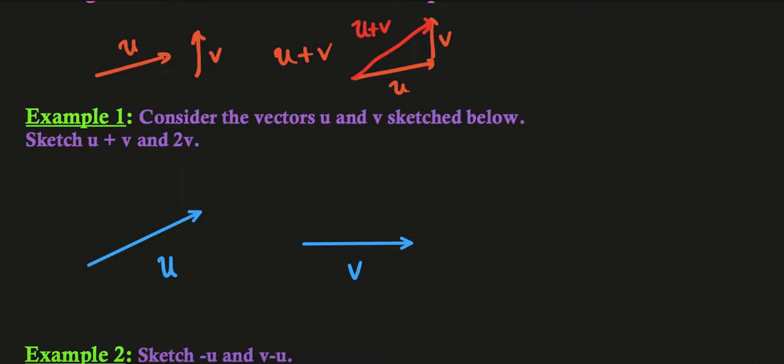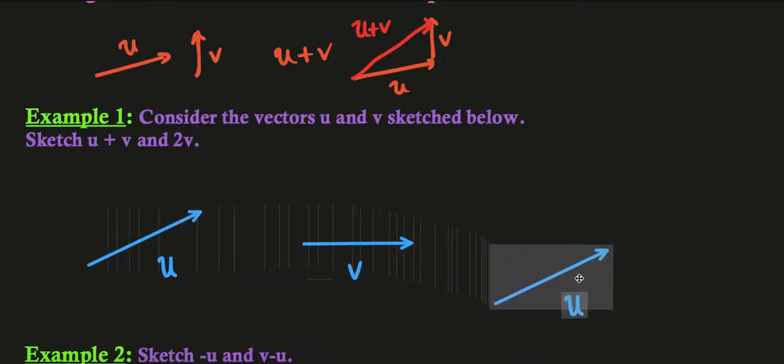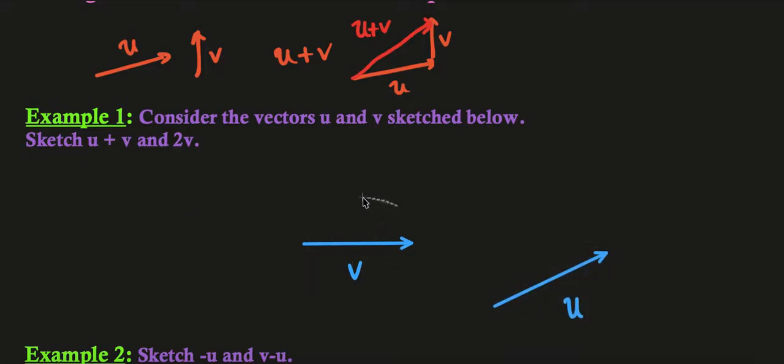So what we're going to do is take our vector, let's take the whole thing, I'll just move it over here for convenience, and then we'll take v, add it to the end, and then the resulting vector is this one here. So this vector here is u plus v.